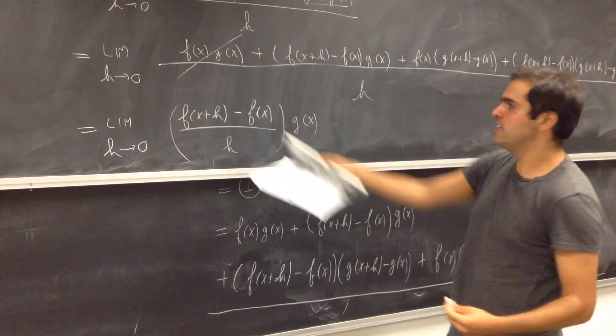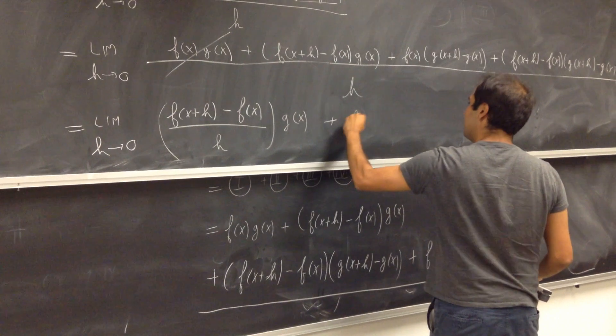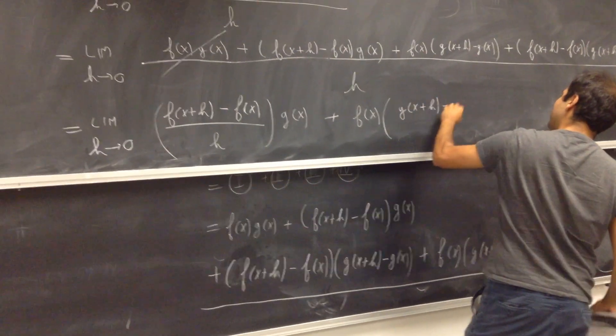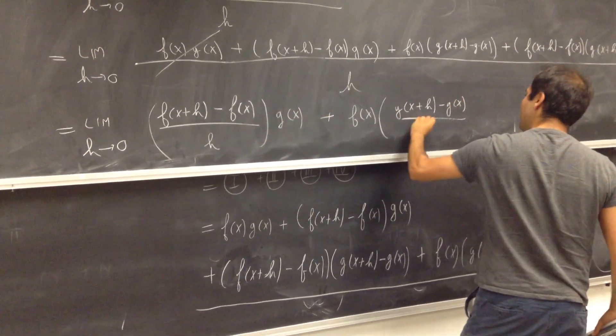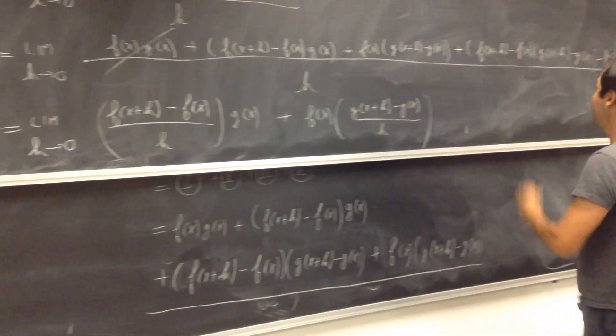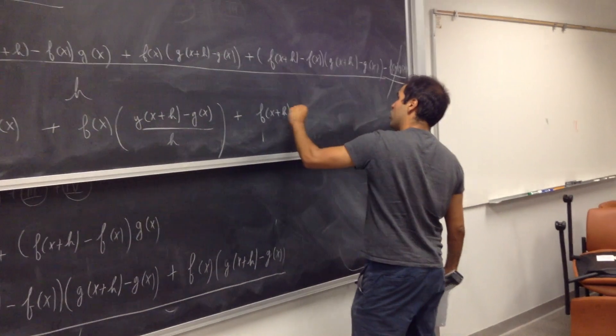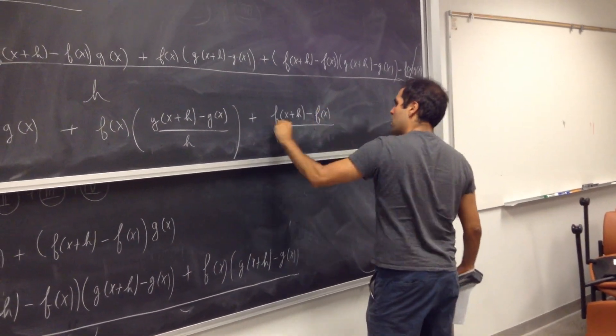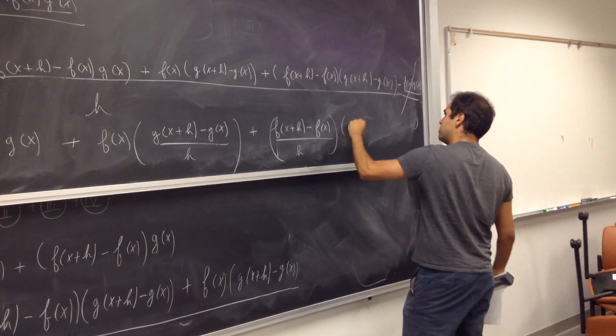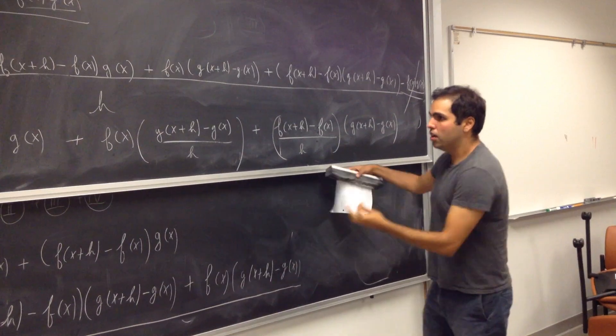Look, this smells very derivative-y. In fact, this is f prime of x. And look, the same spiel here: f of x times g of x plus h minus g of x divided by h. Again, f prime g plus fg prime, so that's very good news, plus this weird term - f of x plus h minus f of x over h times g of x plus h minus g of x.